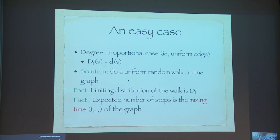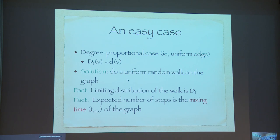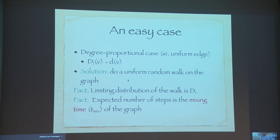So why is this interesting? Here is a very easy case. Suppose the prescribed distribution is actually proportional to the degree of a node — let me call this distribution d1, where d1(v) is proportional to the degree of v. This is the uniform edge case. The solution is very simple: just do a uniform random walk on the graph. Once the random walk reaches its limiting distribution, the distribution is exactly d1, the degree of the node. The number of steps you need to run this walk until the limiting distribution is achieved is exactly what is called the mixing time of the graph.